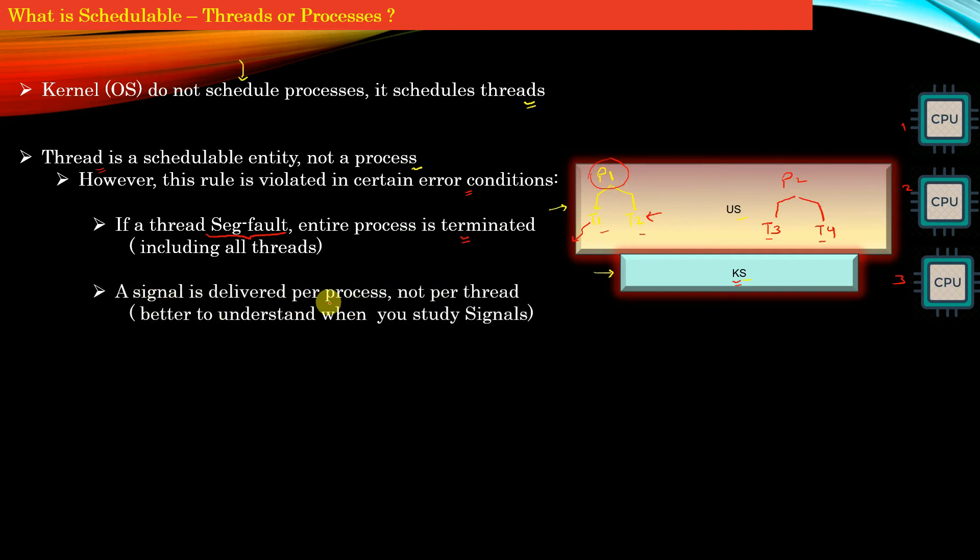Similarly, a signal is delivered per process, not per thread. If you don't have an idea about signals, it's better to understand this point when you study signals. At a higher level, when the kernel or operating system delivers signal S, it's delivered at the process level, not the thread level. One example is the segmentation fault signal, SIGSEGV. When this signal is delivered to the process, the entire process is terminated with a segmentation fault error.